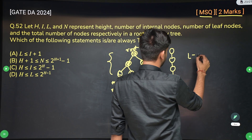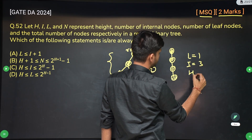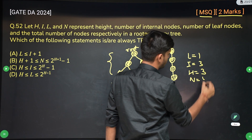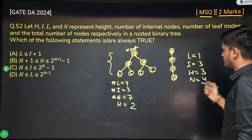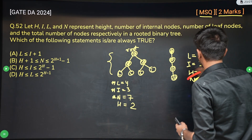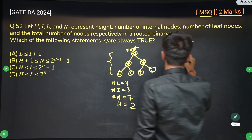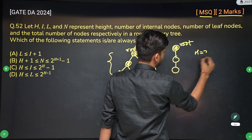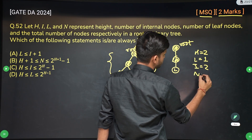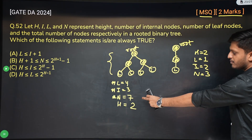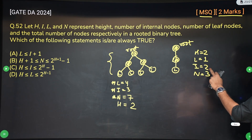Similarly, for the chain case with height 2, the number of leaf nodes is 1, the number of internal nodes is 2, and total number of nodes is 3. So for height 2, the maximum number of nodes is 7 and the minimum is 3. The maximum number of internal nodes is 3 and the minimum is 2.